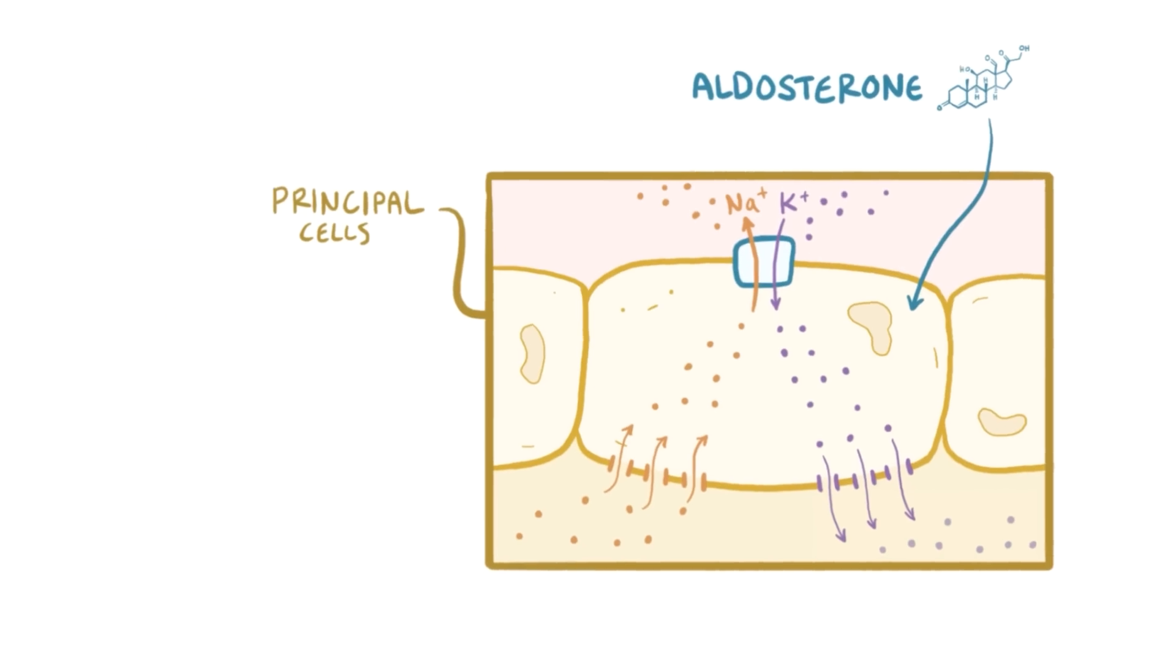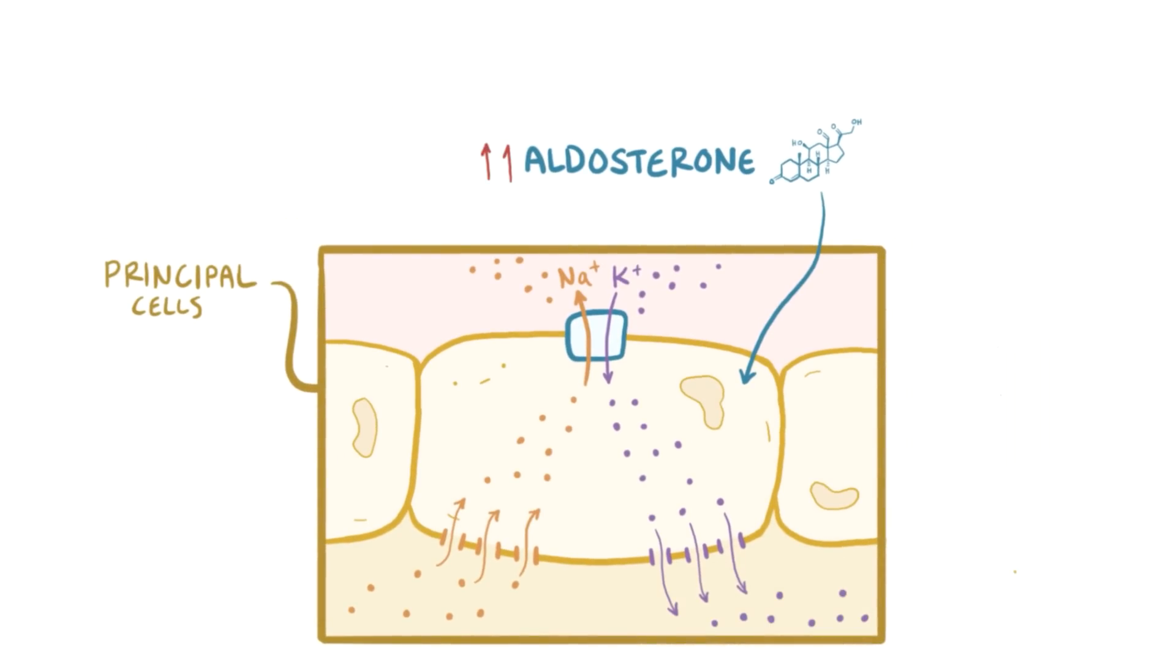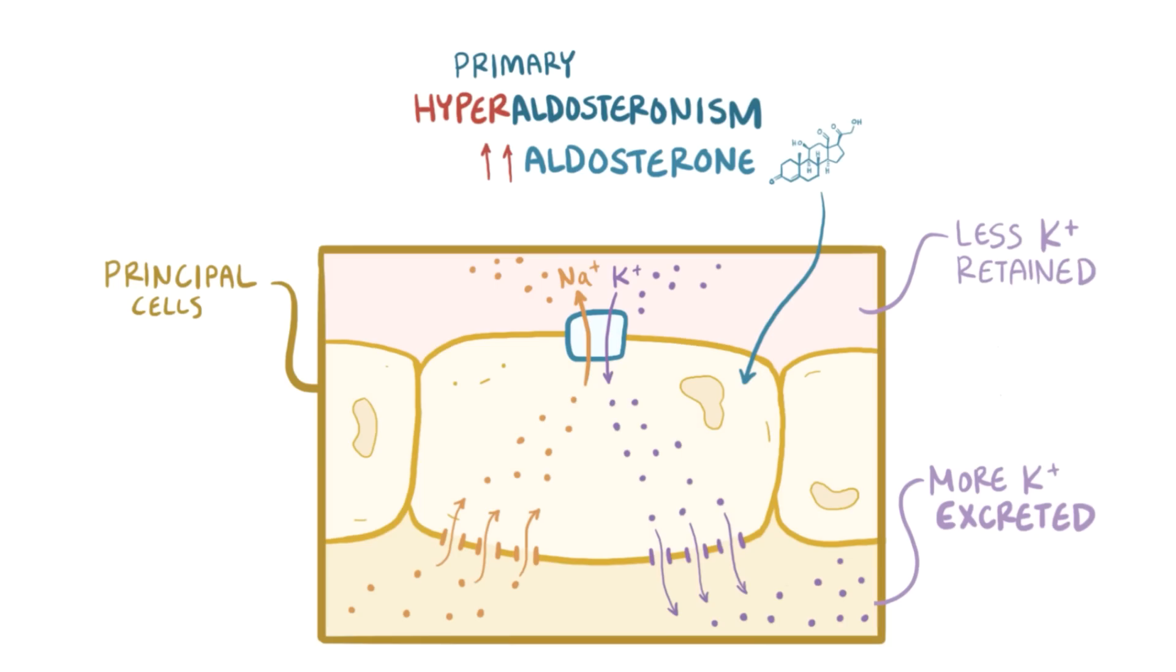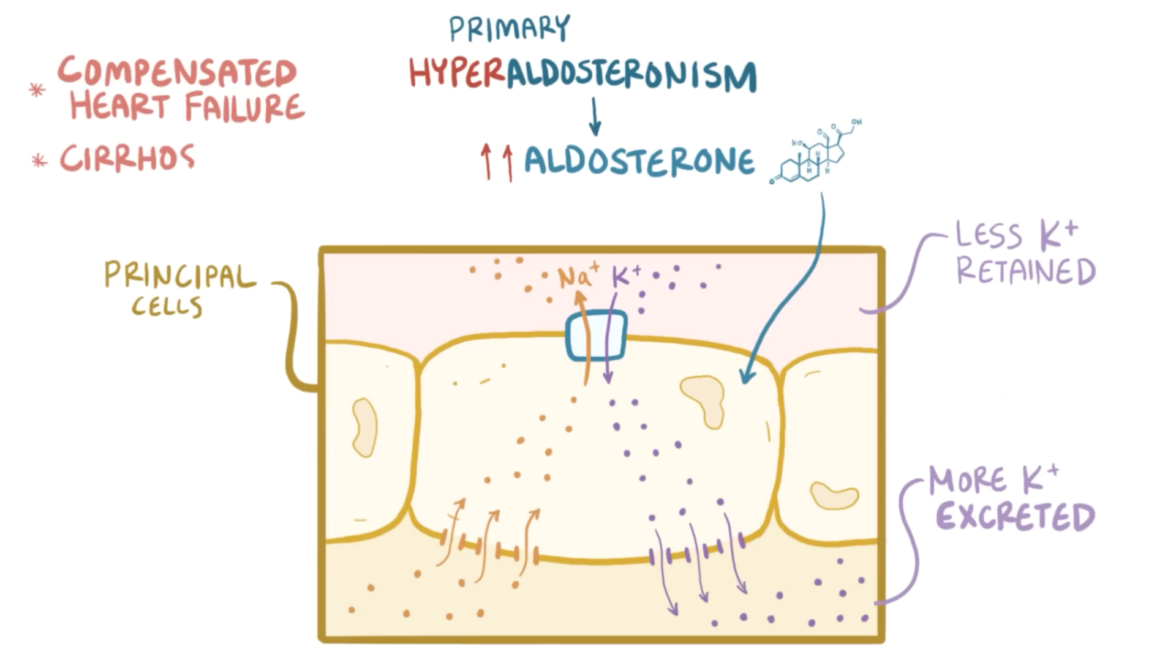Having said all that, in situations where somebody produces too much aldosterone, like primary hyperaldosteronism, then there's more potassium secretion by the principal cells, meaning more gets excreted, and that means less potassium is retained, causing hypokalemia. Other pathological conditions that cause increased aldosterone levels include compensated heart failure and cirrhosis.